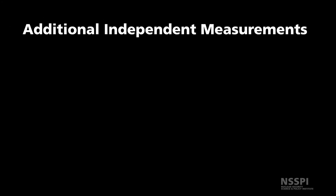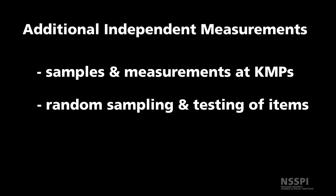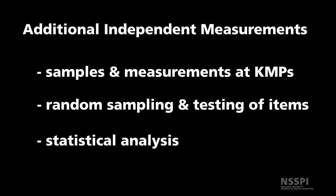The inspector will also take additional independent measurements to verify the state's declarations. Samples and measurements will be taken at all key measurement points in addition to random sampling and testing of items such as feed, product, and waste containers. The inspector will again use statistical methods to confirm that all three verification goals are met. Thus, in-depth analyses of records and comprehensive sampling and testing of items will allow the inspector to detect diversion by biasing that employs falsifying records.